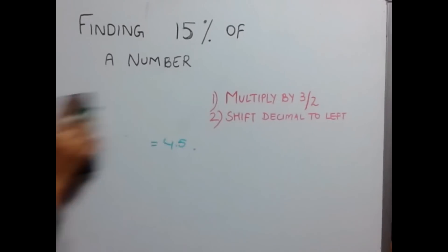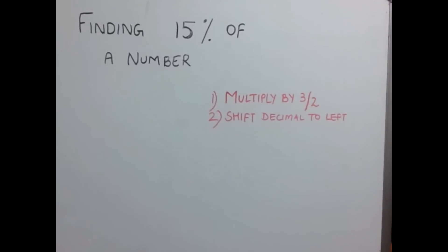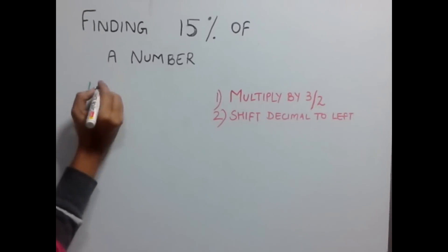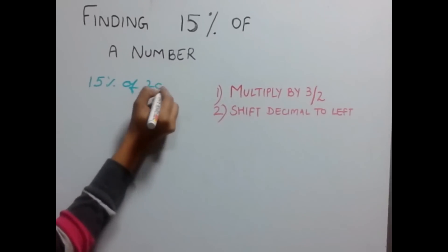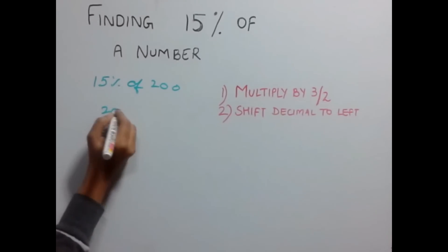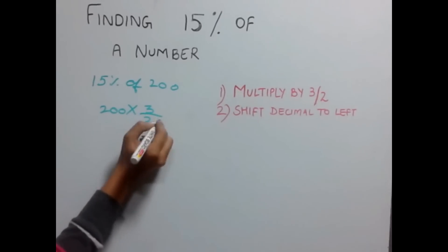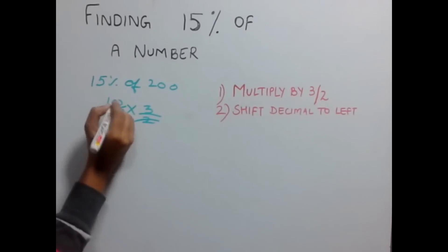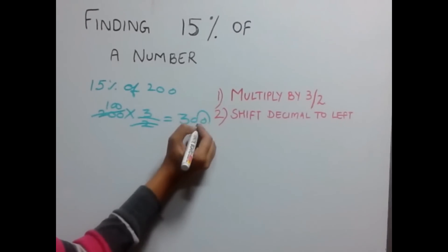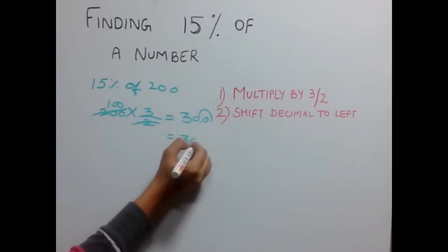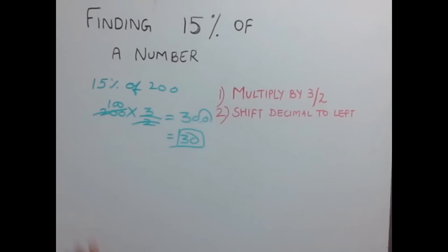Let's have another example. Let's find out 15% of 200. So multiply 200 by 3 by 2. 200 divided by 2 gives 100 into 3, which is 300. Shift one decimal over here, which gives 30 as the answer. Easy.